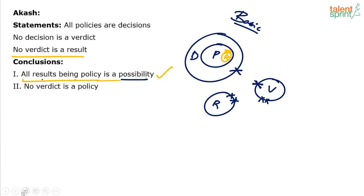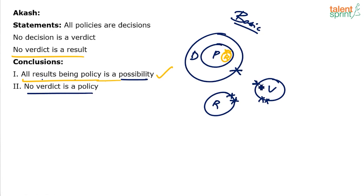Second conclusion: no verdict is a policy. This is a definite-type conclusion, so treat it differently. Is it true? Yes, definitely true. We know that verdict cannot touch decisions. If verdict cannot touch decisions, how can verdict touch policies, which are always inside decisions? Verdict cannot touch policies, so no verdict is a policy is also true. Your answer should be both follow.